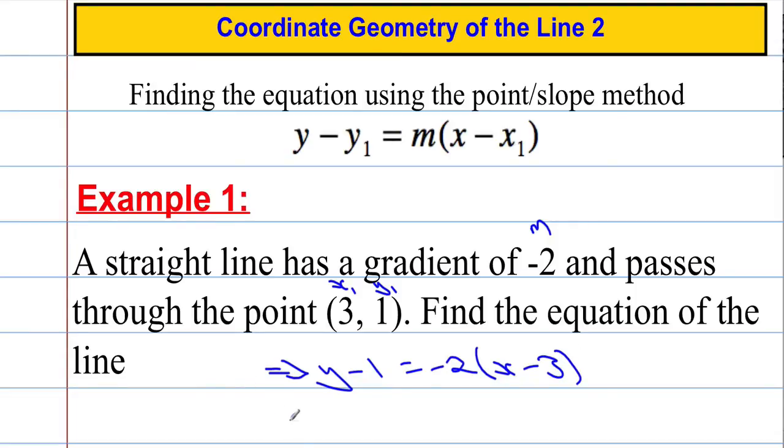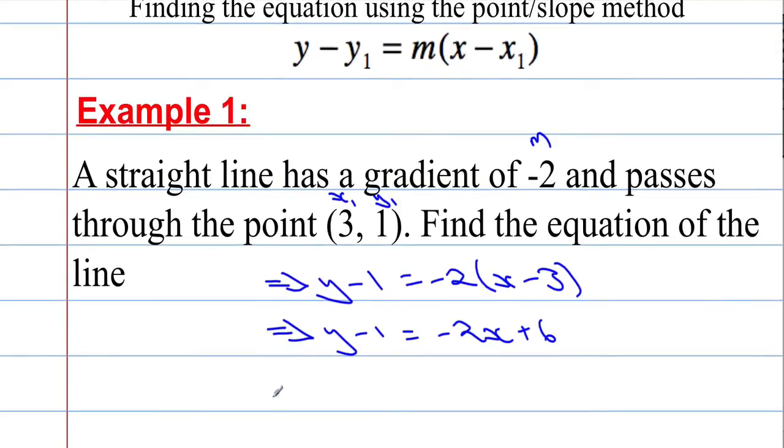Now what we're going to do is just tidy it up and get it in the form y equals mx plus c, or ax plus by plus c equals 0. You can choose. So y minus 1 equals, I'm going to expand this out, negative 2x, negative 2 times negative 3 is positive 6. And finally, I'm going to add 1 to both sides. So y equals negative 2x plus 7. So the y-intercept is 7. All you've got to do is plug it into the formula. Obviously the most important part is ensure that you know that formula off by heart.